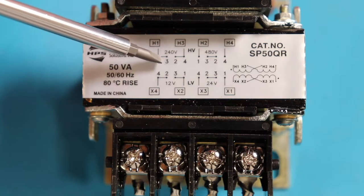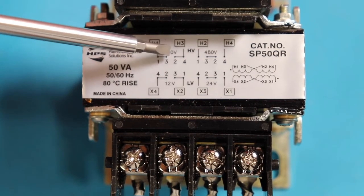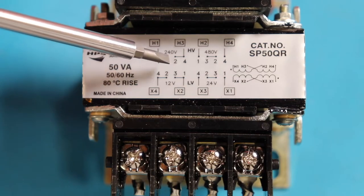Once we put our jumpers in, we then can connect our power, which is these lines here. And for both voltages, they're connected at 1 and 4.